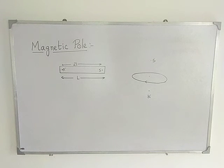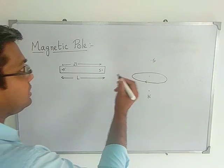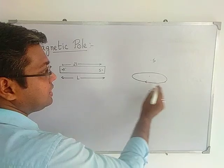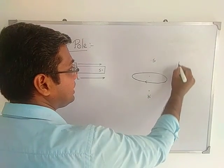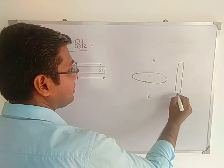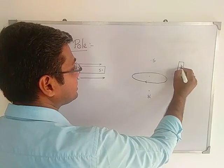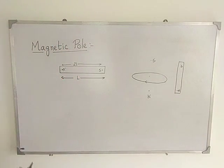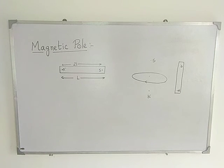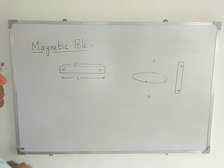The north pole will be created on one side. Considering the current-carrying loop as a magnet, we can easily say this is the north pole and this is the south pole. So the current-carrying loop is also behaving like a magnet — this is the north pole and this is the south pole.